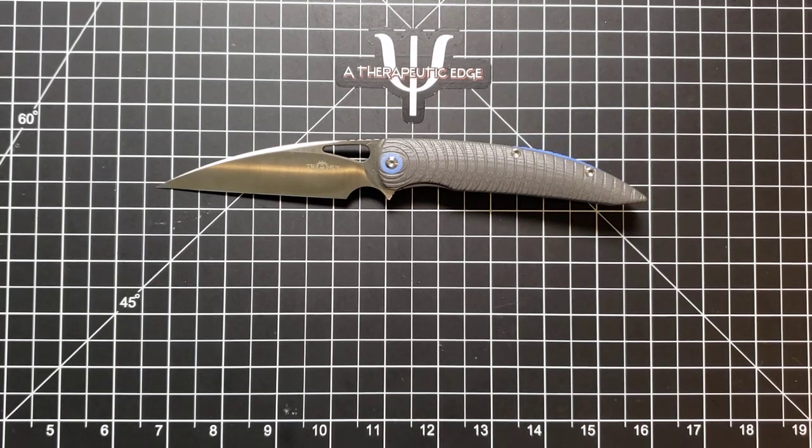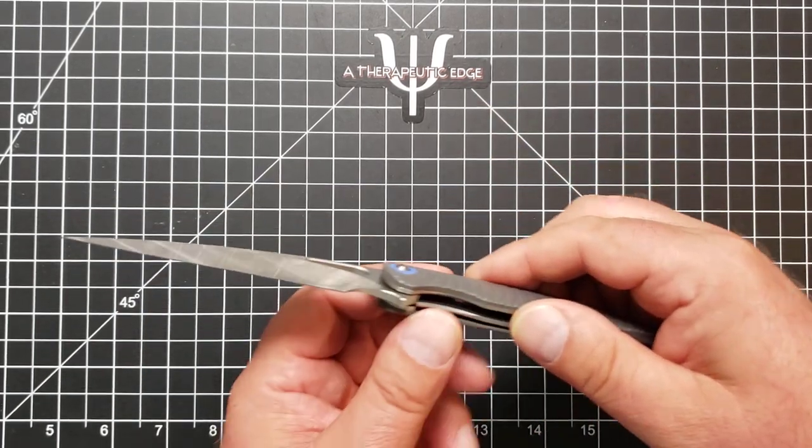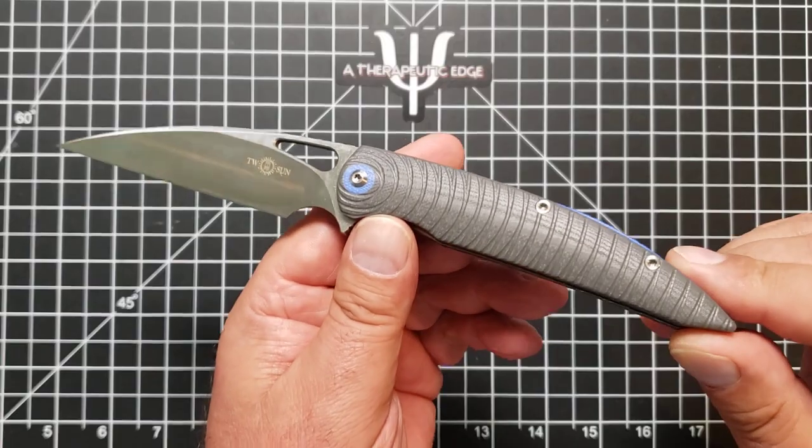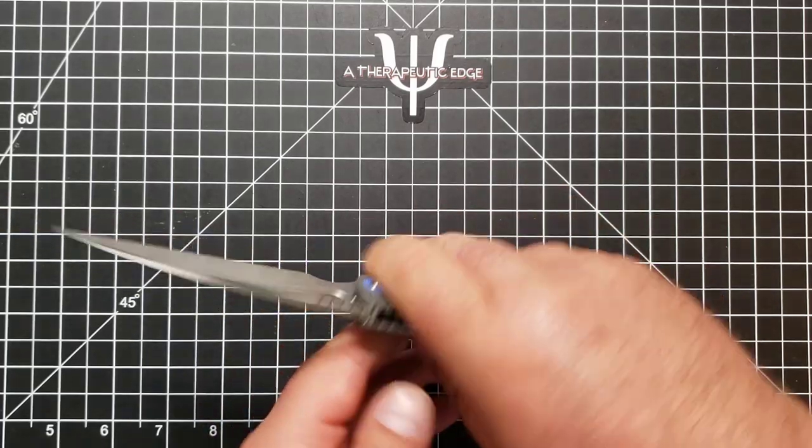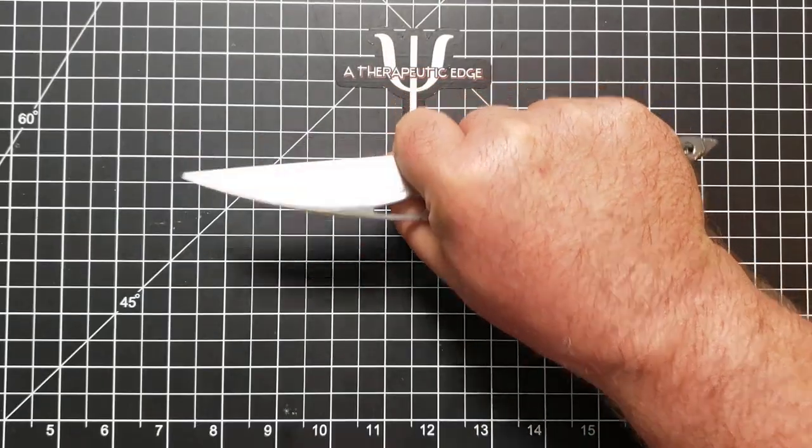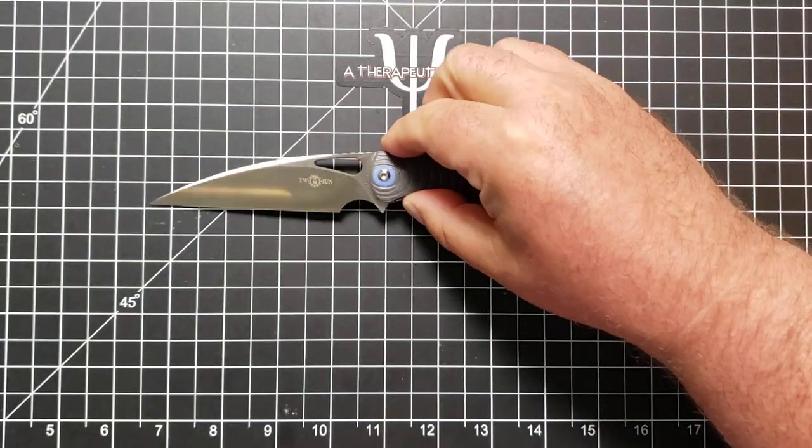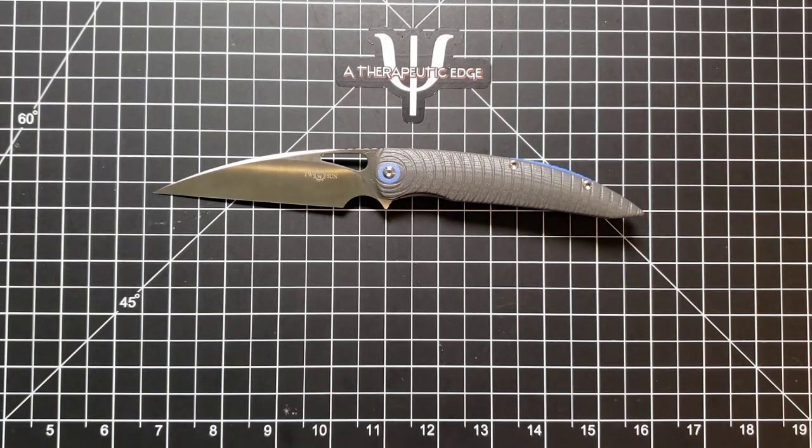This is the TS-116. It is a Max Tachuk design. I'm not sure how to say his last name, sorry about that. Anyway, it is the TS-116. It is 14C28N in blade steel. It has steel liners. It has really interestingly milled G10 with blue G10 backspacer. Nice deep carry pocket clip. This is just a spectacular knife and it's big. I really like it.